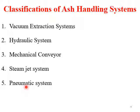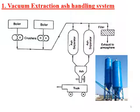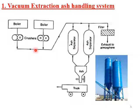Ash is collected from the air preheater, economizer, and ESP. There are five methods that can be used to handle this ash from the various collection points.